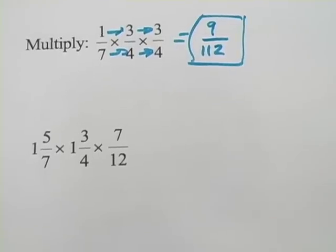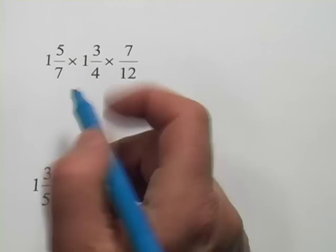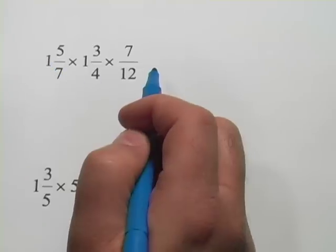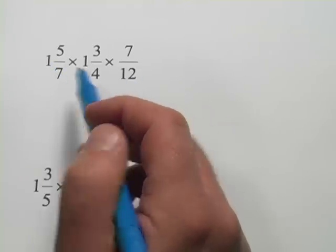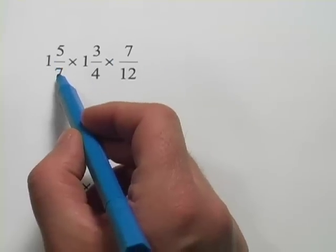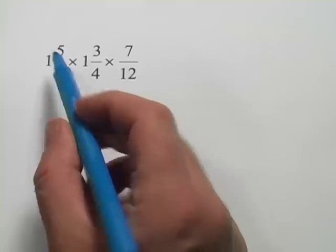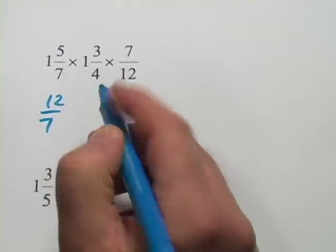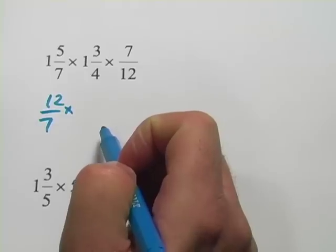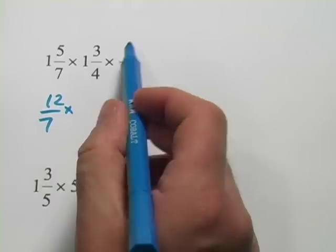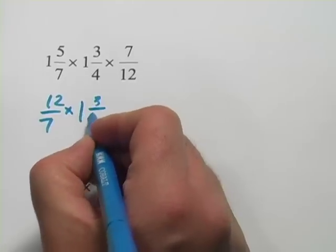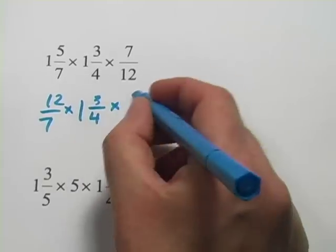Let's try this next one. Here we want to convert our mixed numbers into improper fractions and then do our multiplication. So let's go ahead and do this. So 1 times 7 is 7 plus 5 is 12 sevenths times 1. Actually, look at this. I have 12 sevenths here and I have 7 twelfths here. Before I even convert this 1 and 3 fourths, I want to show you something. We got really lucky on this problem.